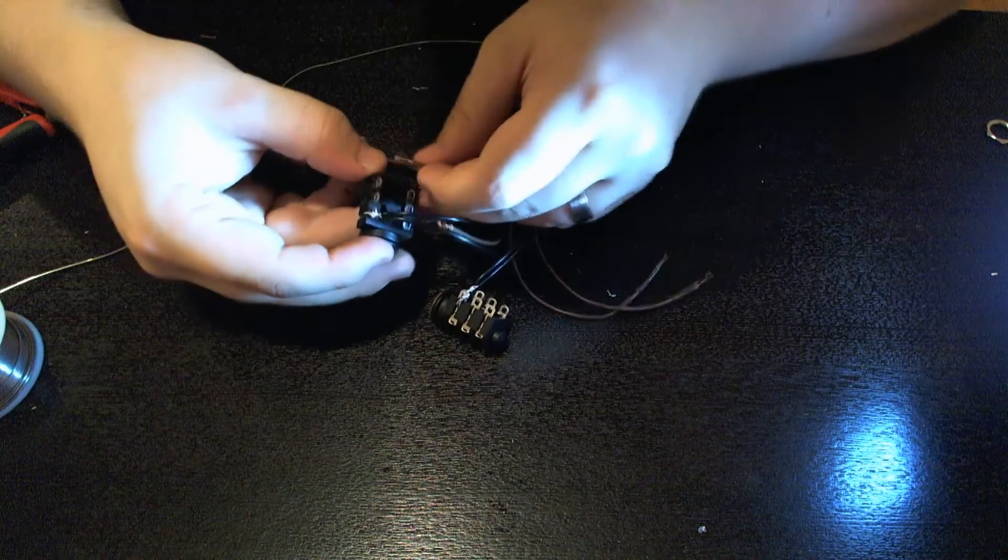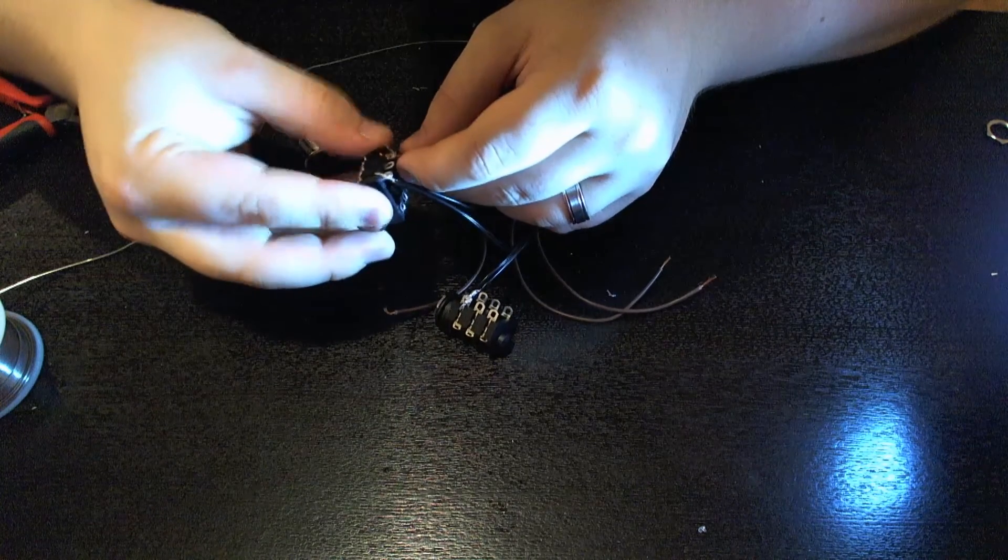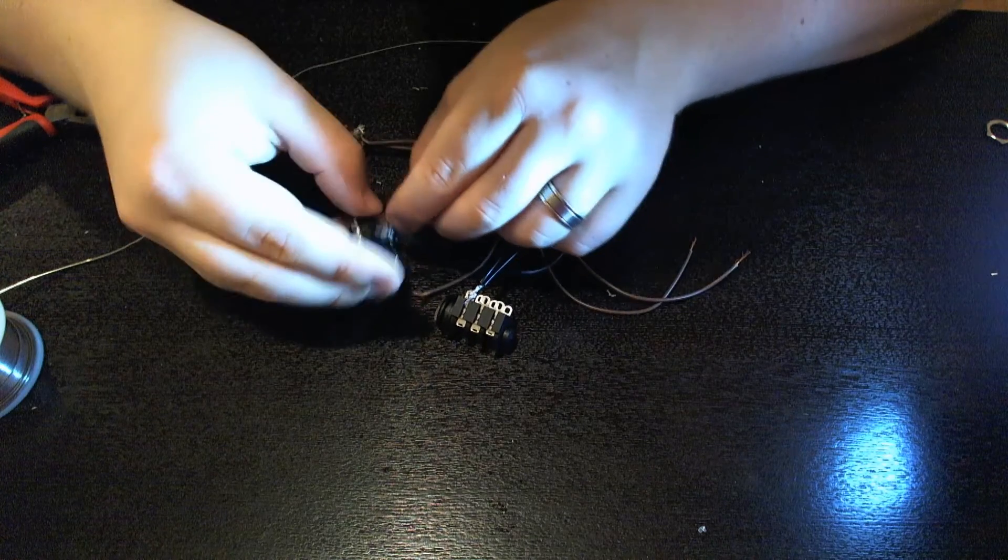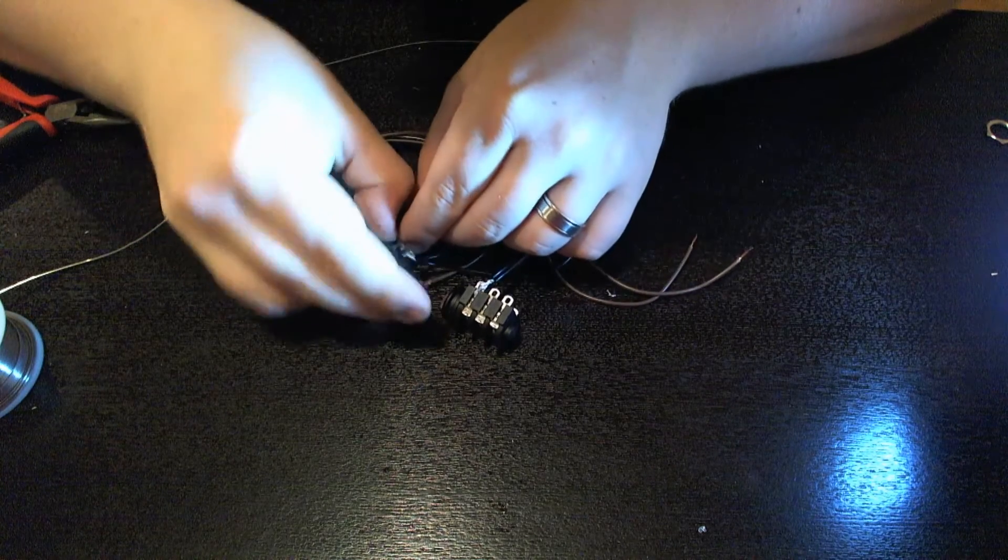And next you want to attach both of the red cables from your tap tempo switch to the tip of both of your outputs and you'll want to attach both of the red cables from your preset selector switch to the ring of both of your outputs.